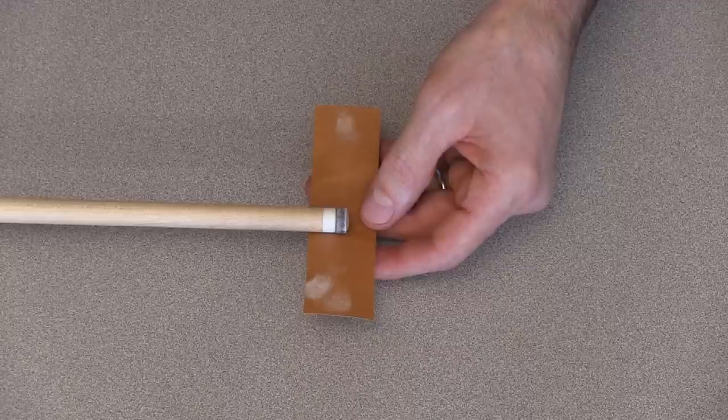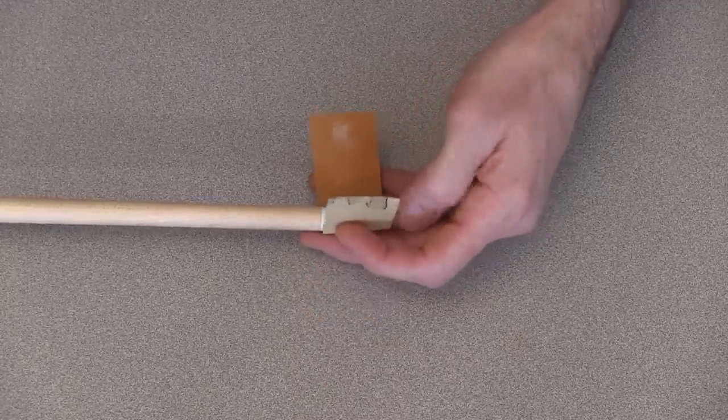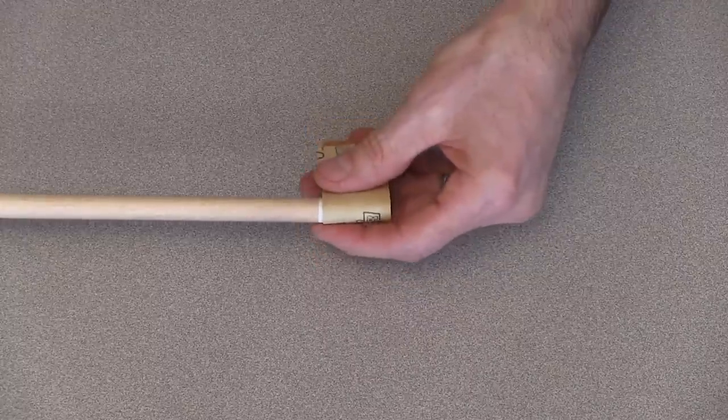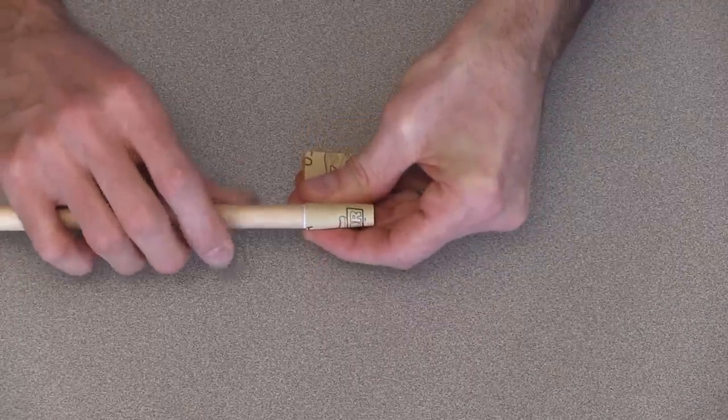You can fine sand the ferrule and tip to help smooth things out even more. This will also clean up the ferrule. Wrap fine sandpaper around the tip and ferrule, keeping it as flush as possible, and turn the shaft.